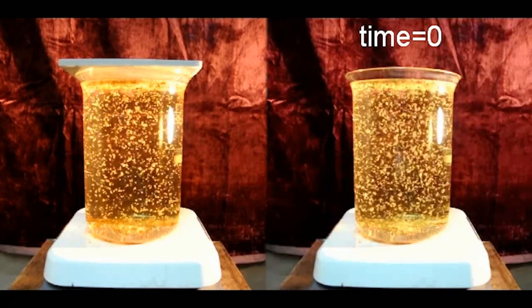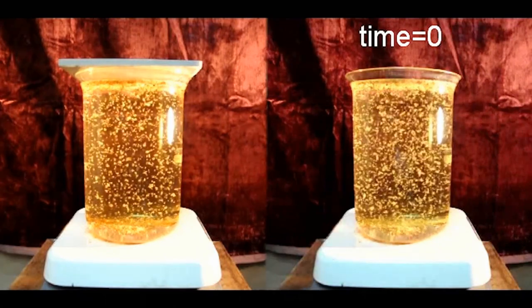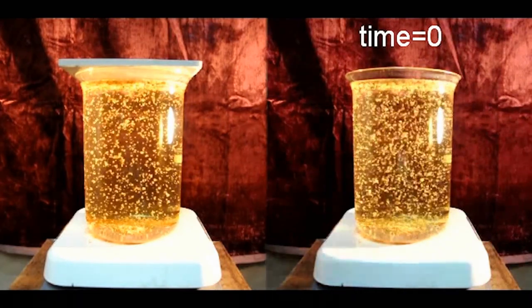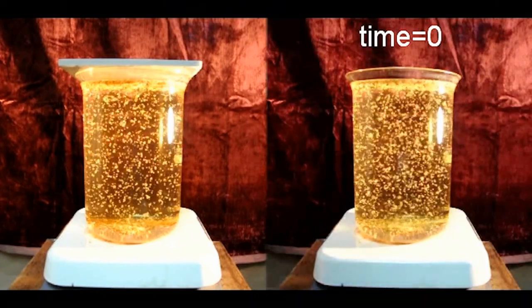By covering the top with ceramic tile, I am preventing heat loss from the top, minimizing the difference in temperature between the top and the bottom, which drives convection. See?